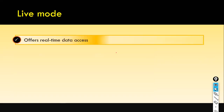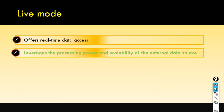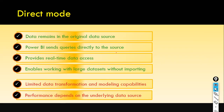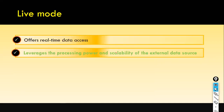In direct query mode, you don't need too much storage space on your local system since data remains in SQL Server. On a need basis, Power BI queries the SQL Server and the requested data is sent back to Power BI Desktop. The next storage mode is live mode. Live mode offers real-time data access and is also similar to direct query mode — you are not importing the data, only loading the metadata.